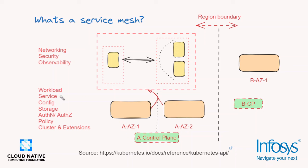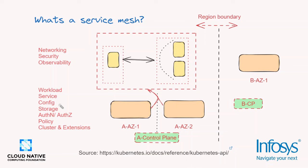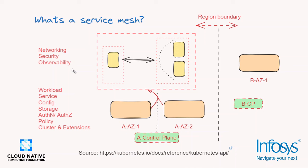However, when it comes to other areas such as networking, there is a limited set of abstractions offered. Kubernetes gives us the abstraction of a service and an ingress, which allows traffic to be accepted into the cluster and routed to various parts. But there is an opportunity here, and that is where a service mesh steps in — essentially offering a higher-level set of abstractions for concepts such as networking, security, and observability.